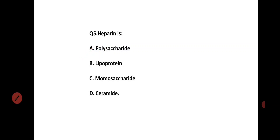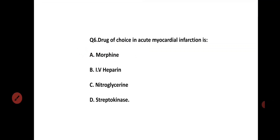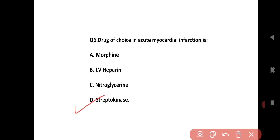The drug of choice in acute myocardial infarction: Option A is morphine, Option B is high-flow oxygen, Option C is nitroglycerin, Option D is streptokinase. The correct answer is Option D, streptokinase.